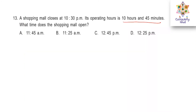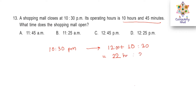The shopping mall closes at 10:30 pm and the operating hours are 10 hours 45 minutes. Let's convert 10:30 pm into 24-hour format. After 12 hours we add 10 more hours and 30 minutes, which equals 22 hours and 30 minutes. This is the ending time. Now from 22 hours 30 minutes we subtract 10 hours and 45 minutes.